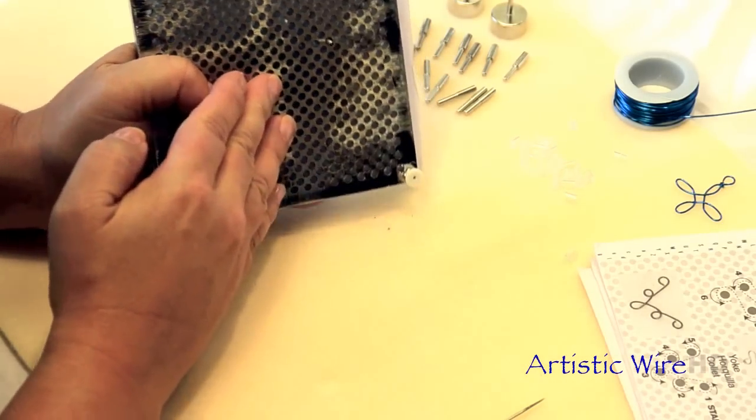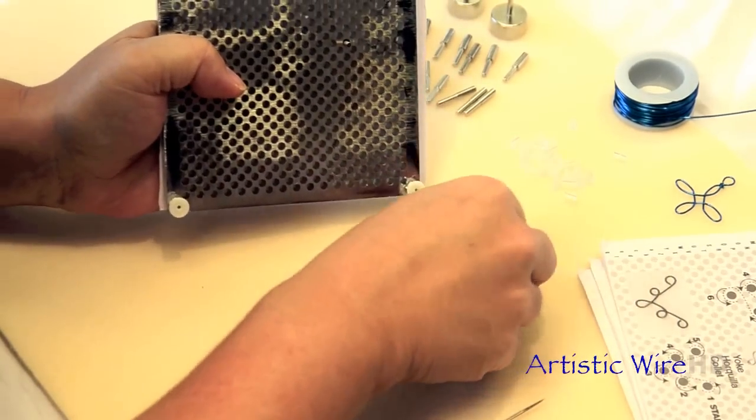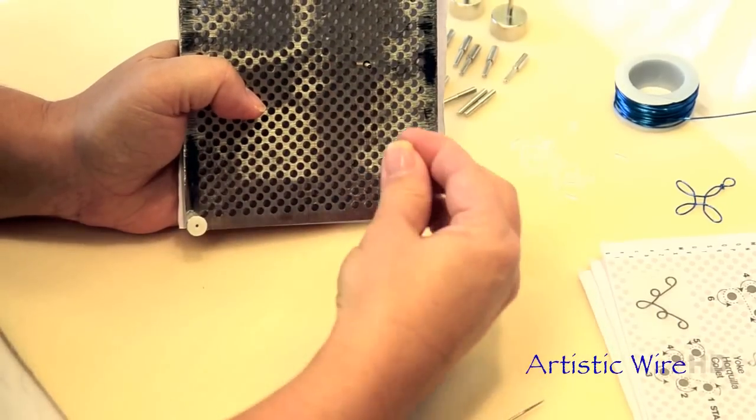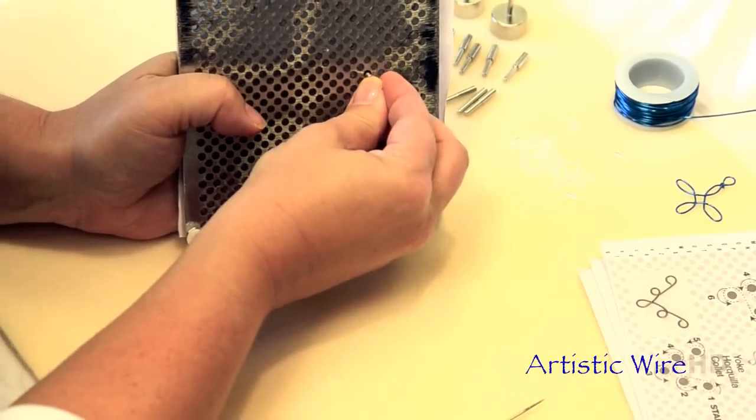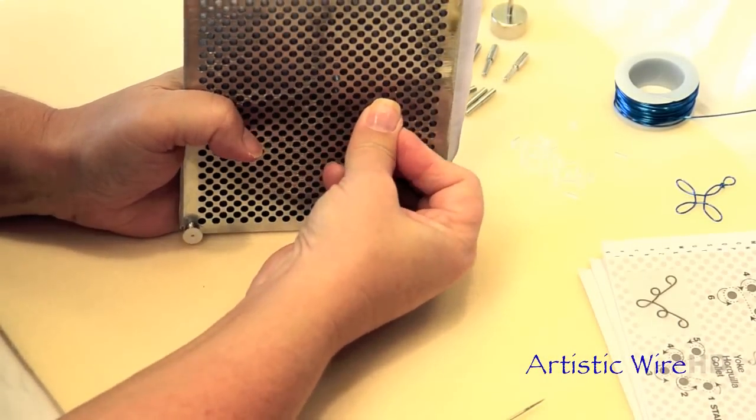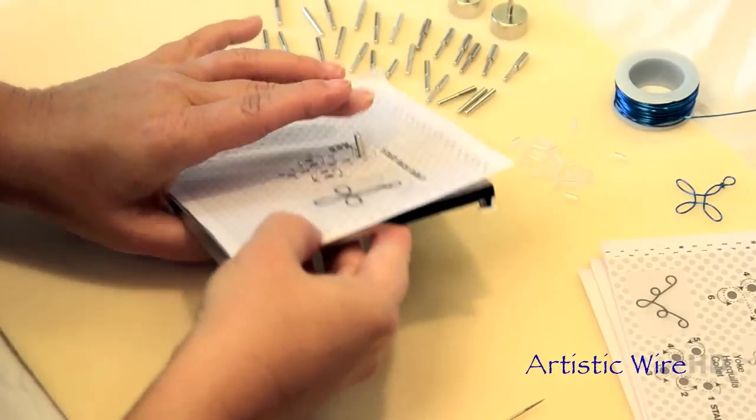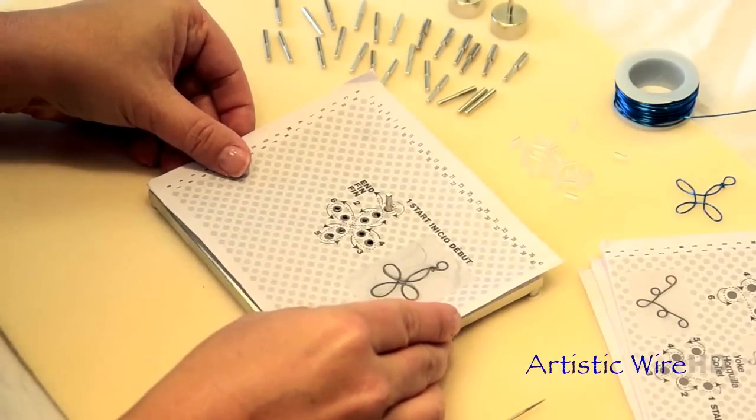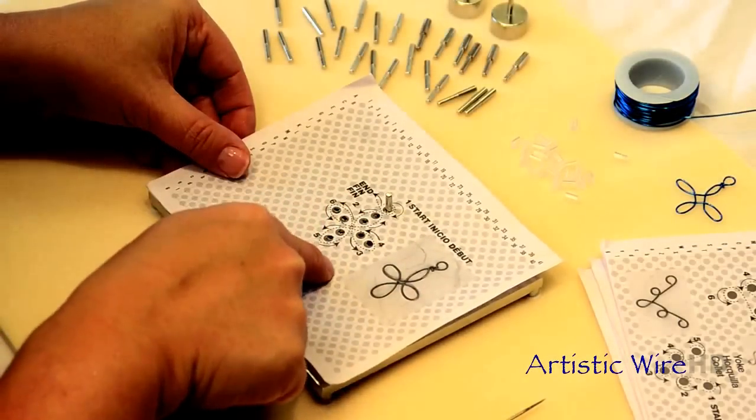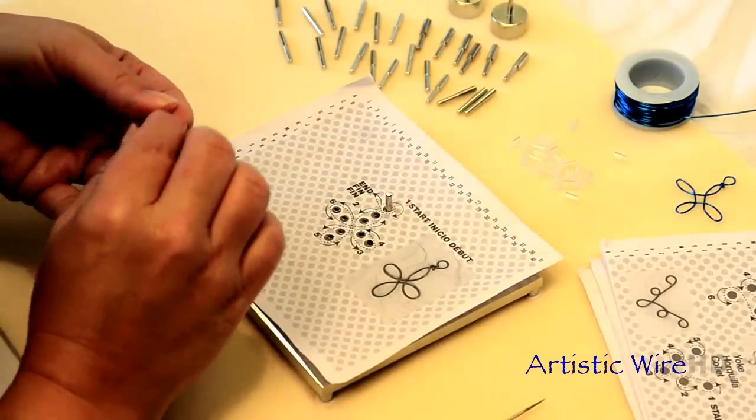And I'm just going to place it right over the bottom and I want to make sure that it's really nice and tight. Then I'm going to turn that back over and I will continue to put my pegs and my peg caps as I build my pattern.